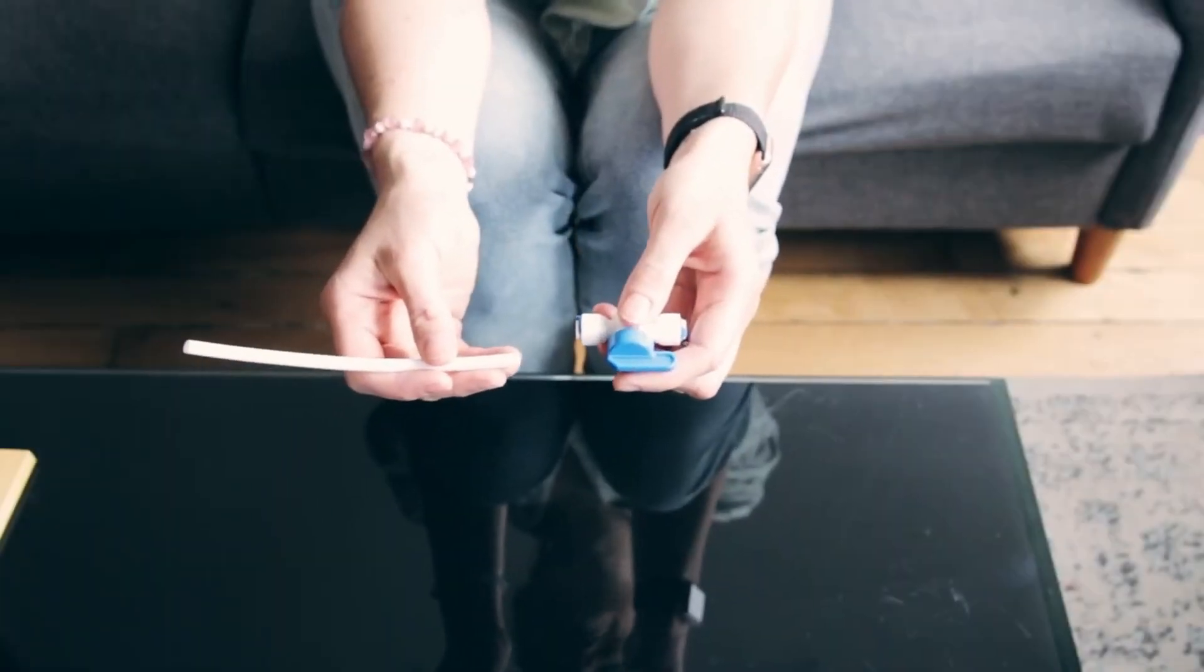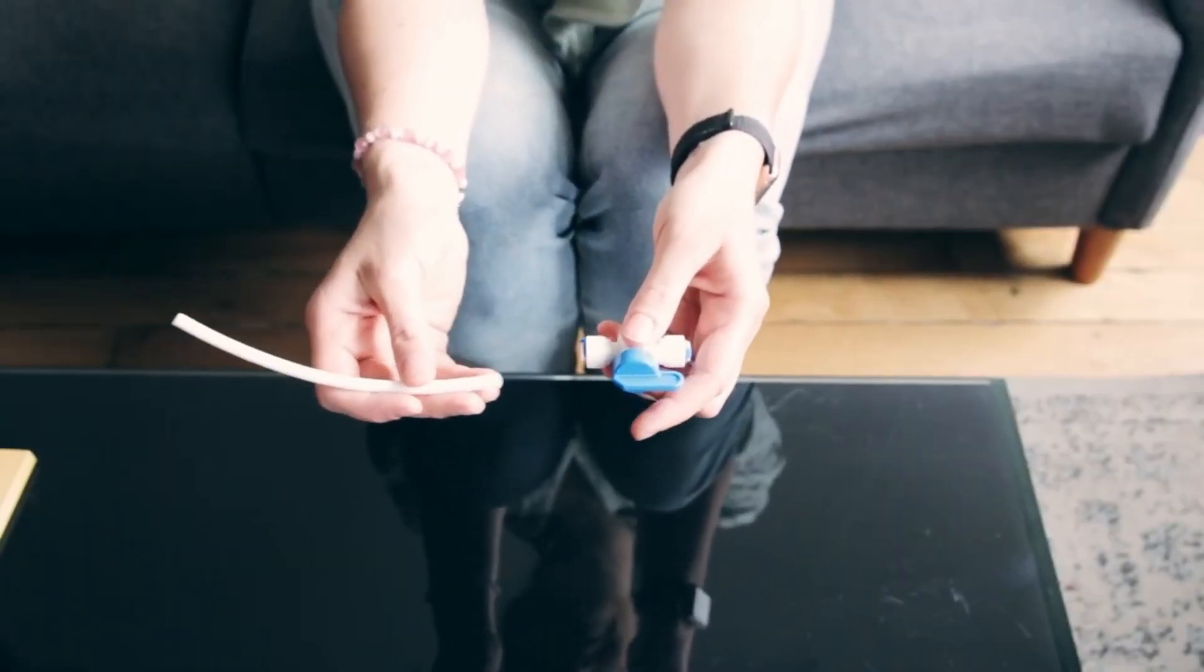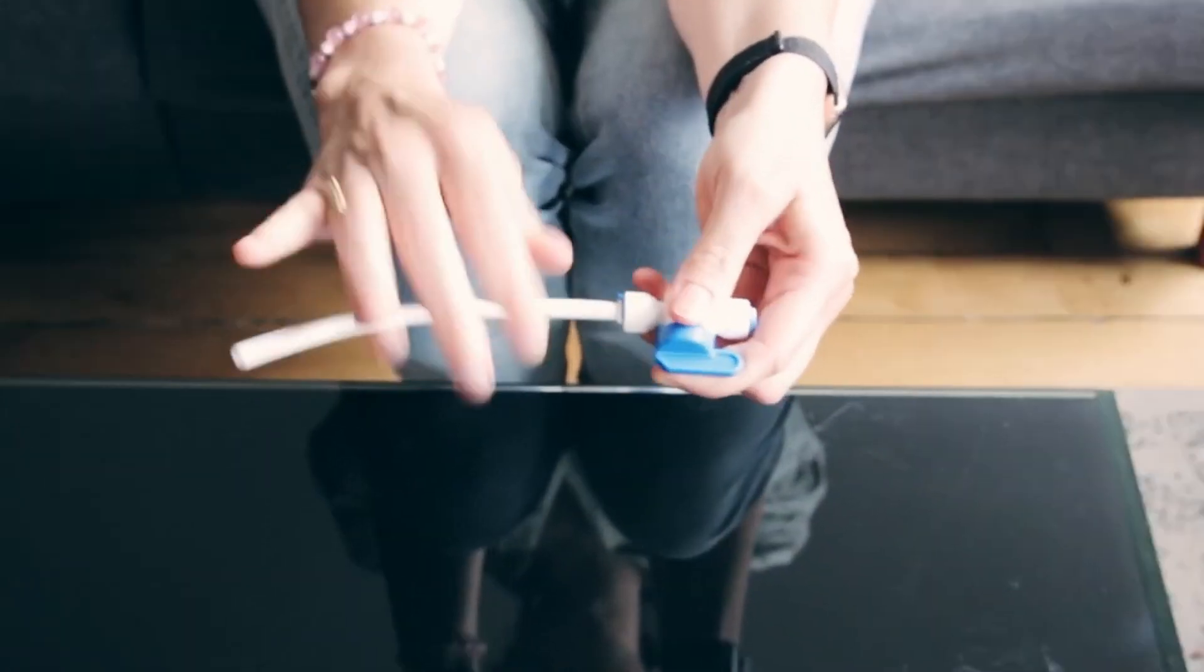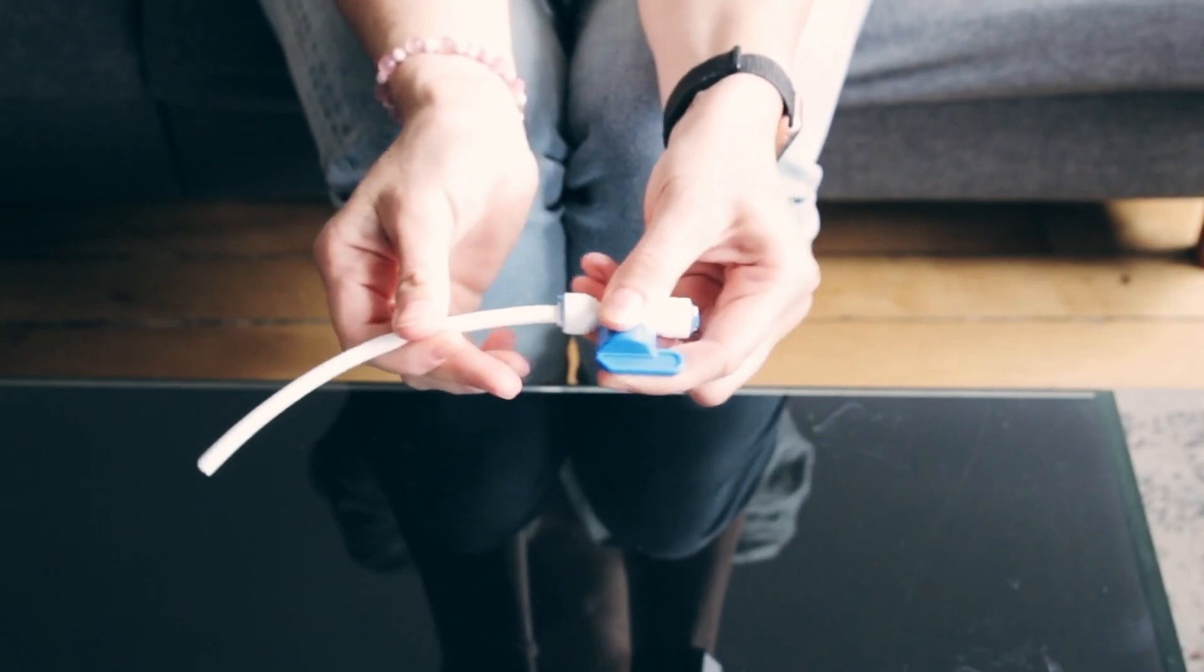Disconnecting your waterline kit is actually super simple because all of the connection points operate the same way. Once you insert any of the tubes, you can feel they're pretty well locked into place.